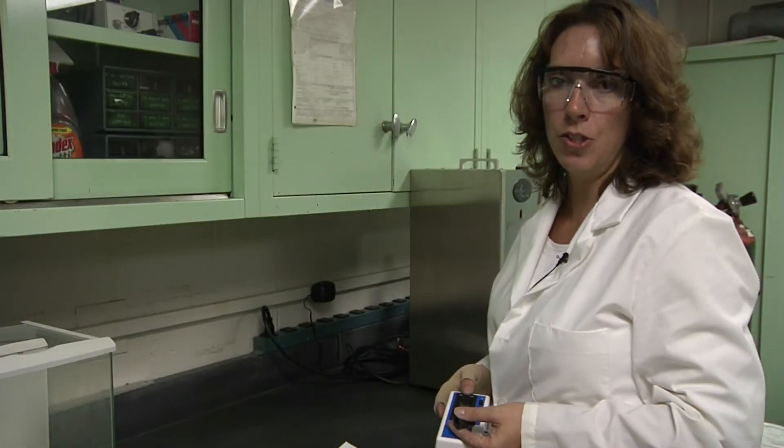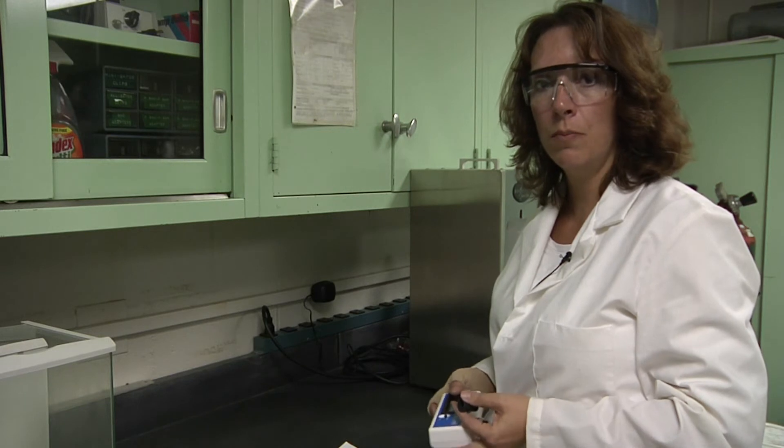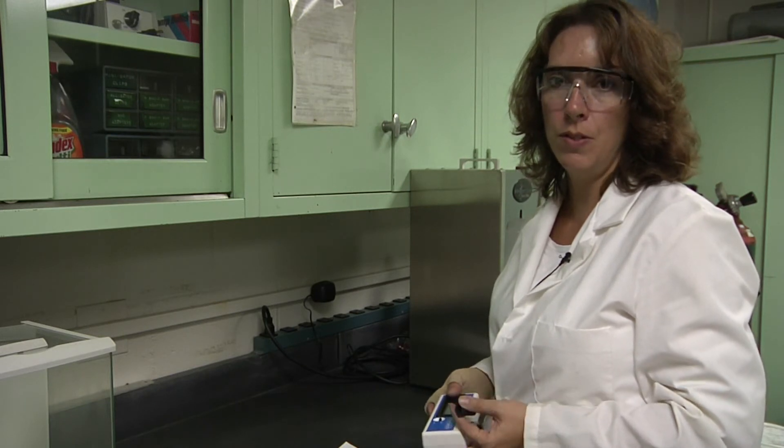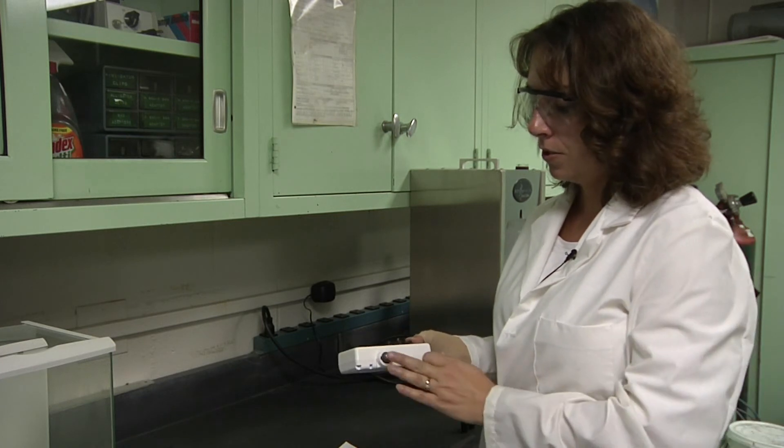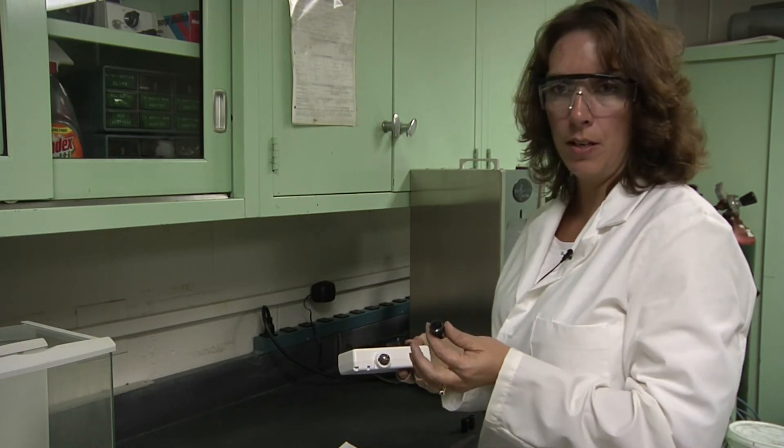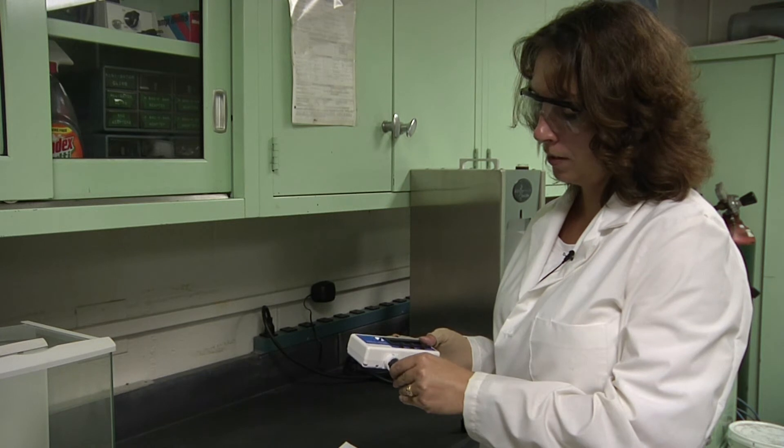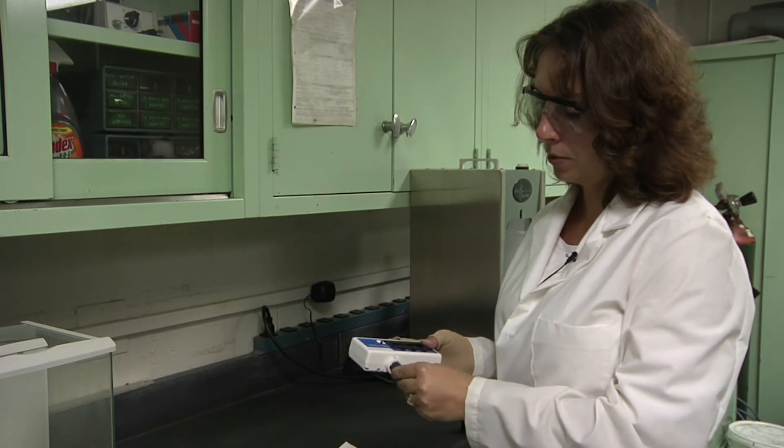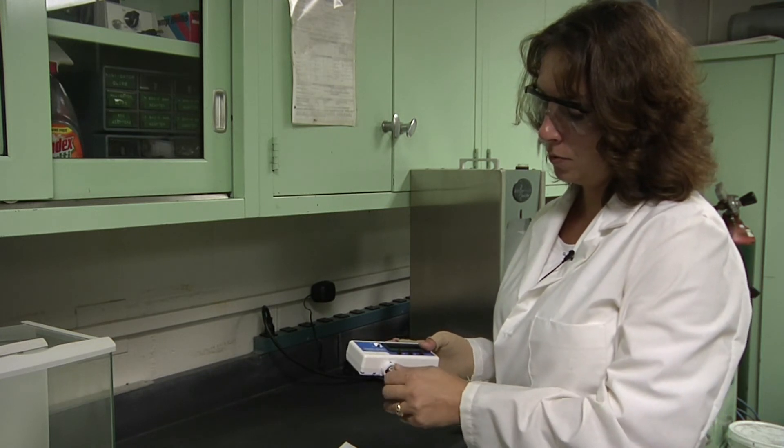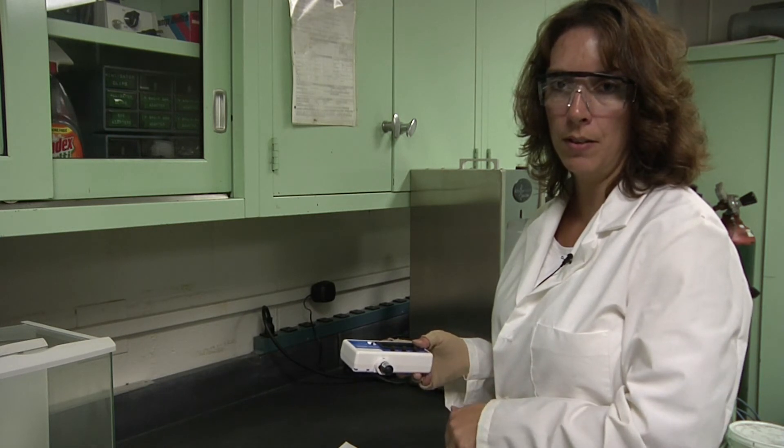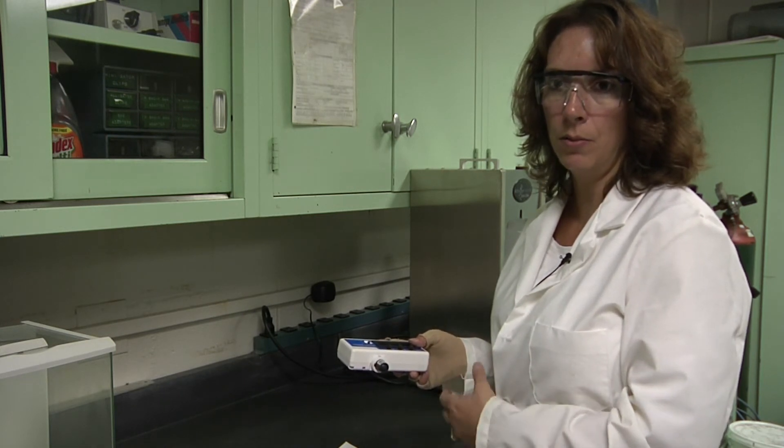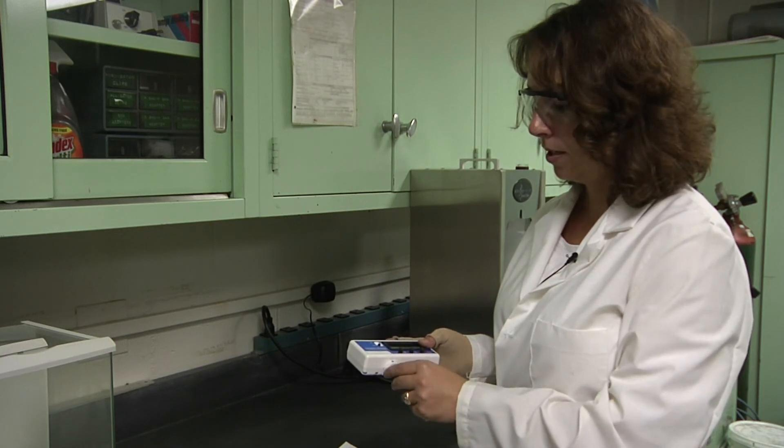There are some basic actions that you need to know to ensure proper usage and accuracy of your CDEM. One is to use the reflectance cup when traveling. Just simply put it on the probe, twist and lock into place to protect the probe when you are moving around either the mine or a building.